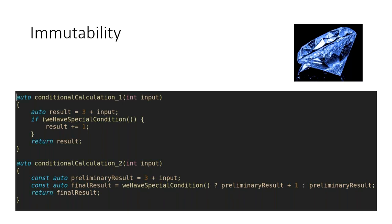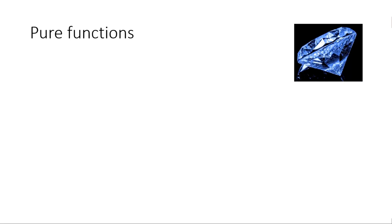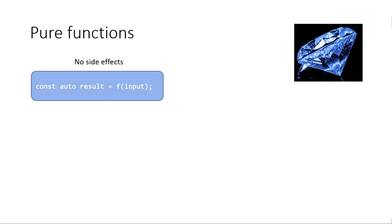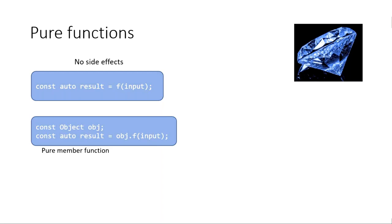Diamonds are very pure, and so are functions in the functional world. A pure function is a function that has no side effects. This is the prototype of a pure function: F takes some input and produces some output. It doesn't necessarily need to take any input, but it has to produce some output — otherwise there would be no reason to call it if it has no side effects.